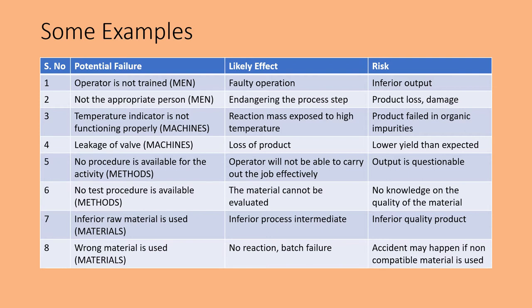In the methods category, if there is no procedure available for the activity, the operator will not be able to carry out the job effectively — that is the likely effect — and the risk is that the output is questionable. If no test procedure is available for testing a material, the material cannot be evaluated, so there is no knowledge of the quality of that material. Similarly, if inferior raw material is used, an inferior process intermediate will be formed, resulting in inferior quality output and inferior quality product.